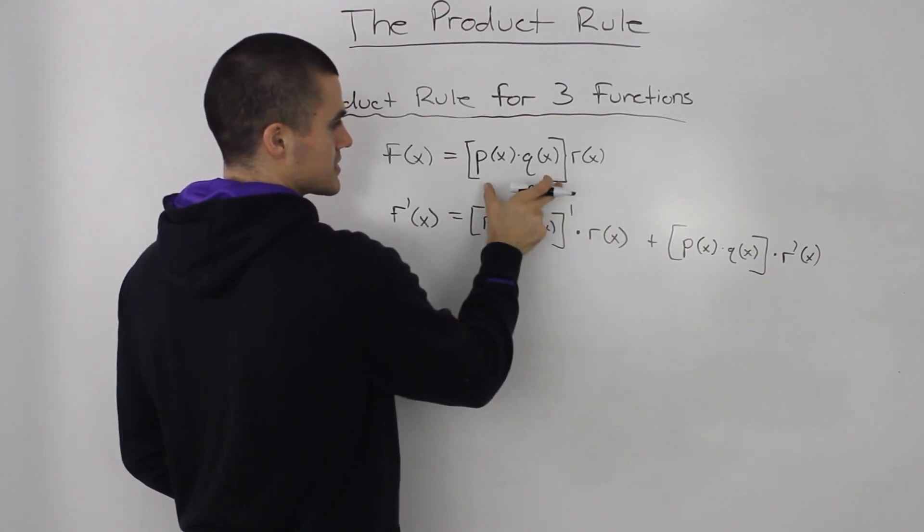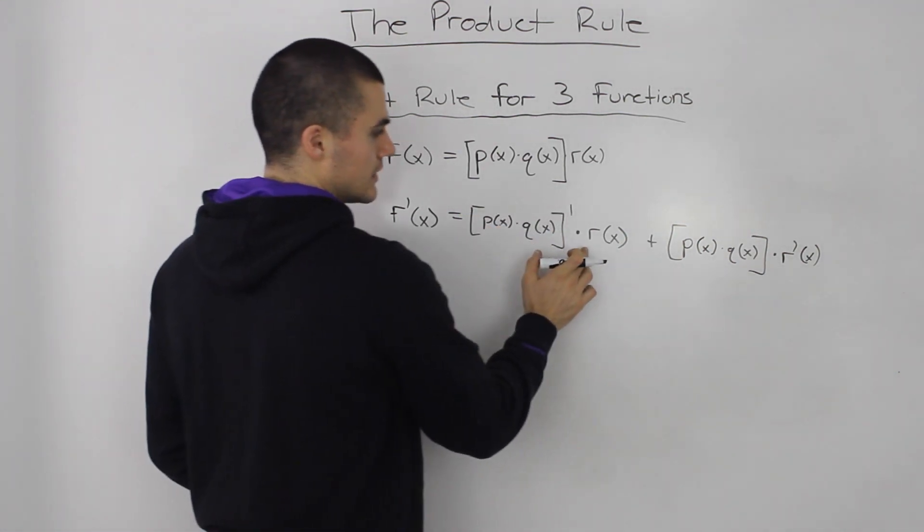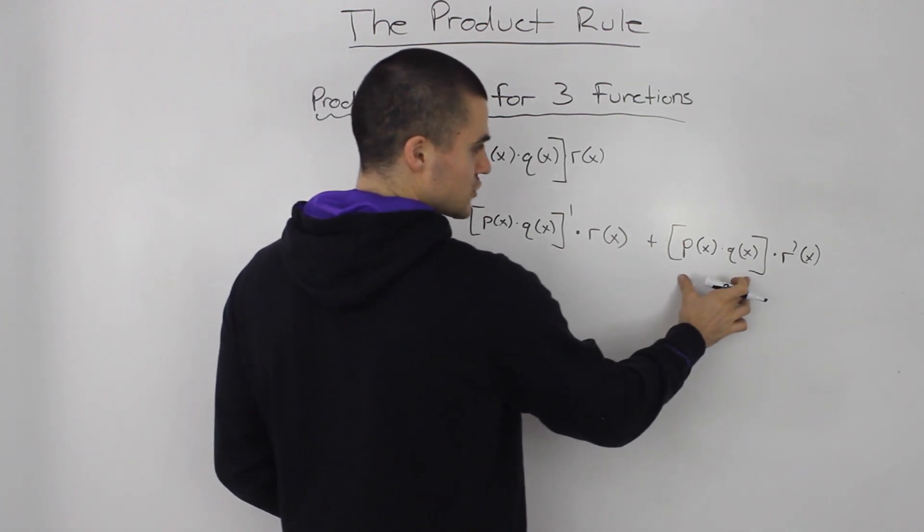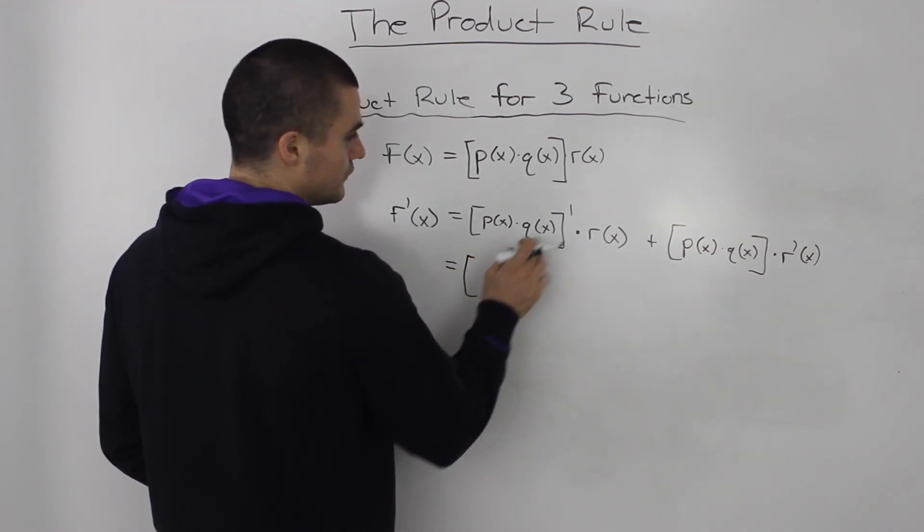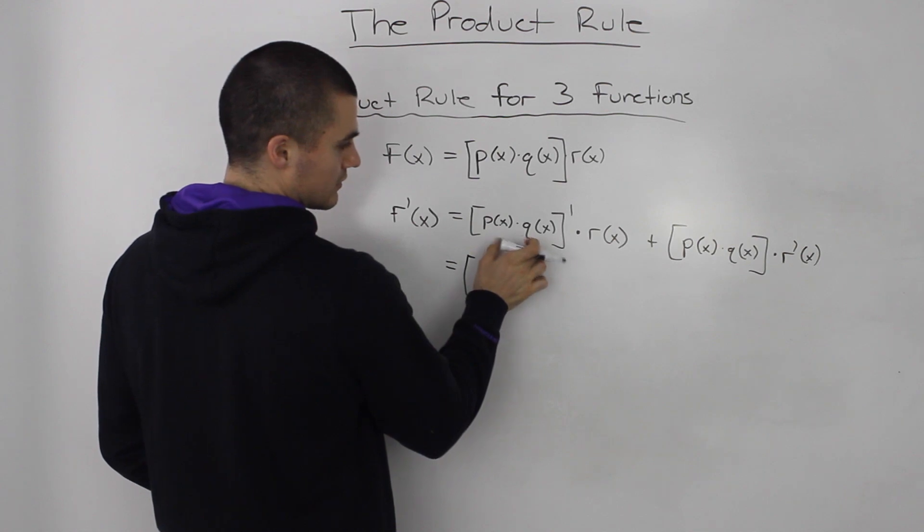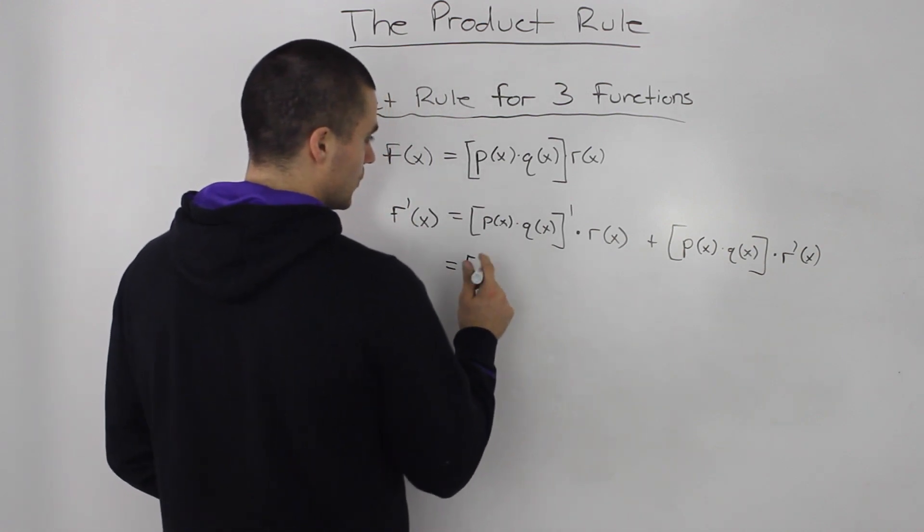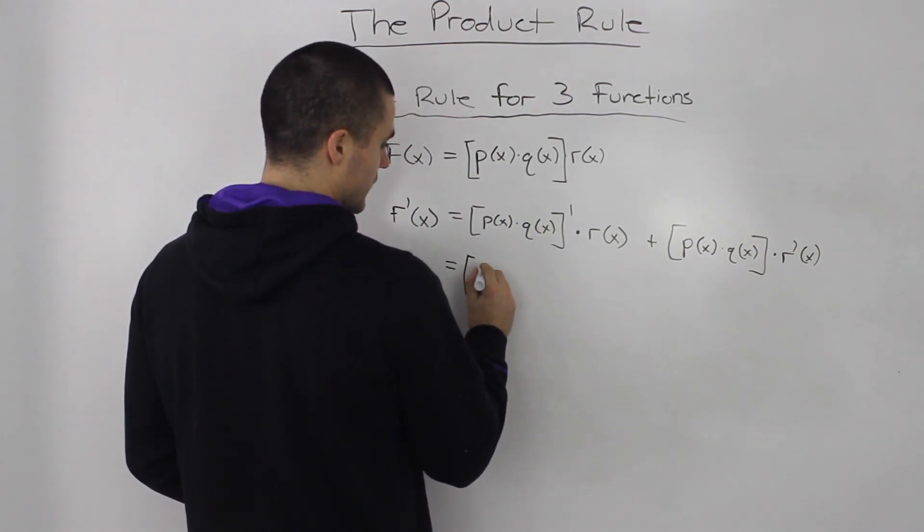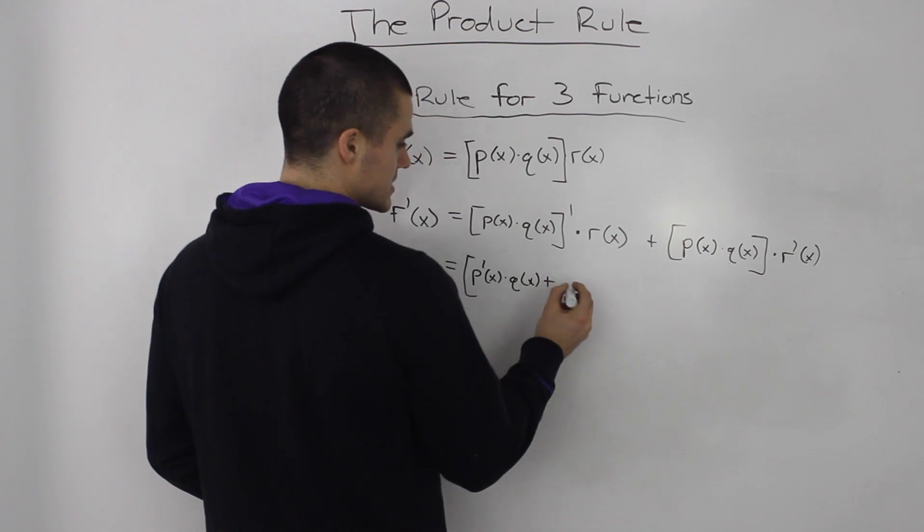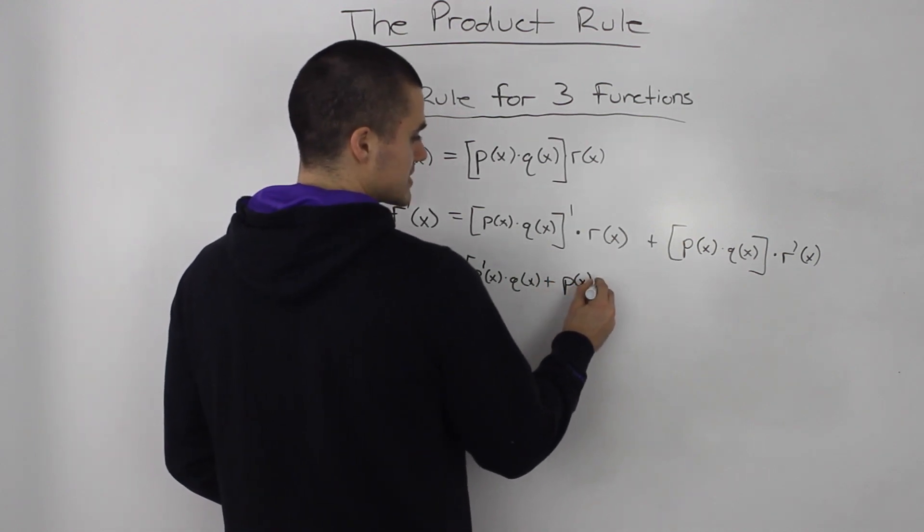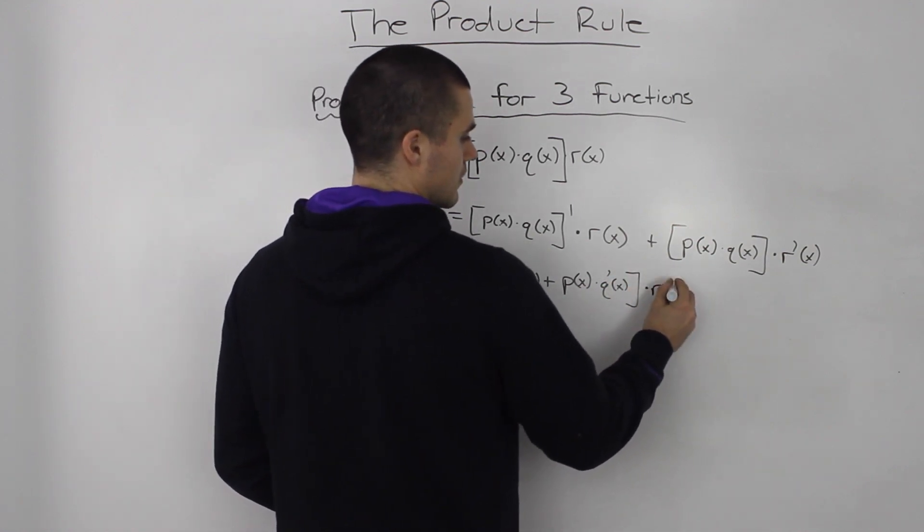And then, notice how the derivative of this function here, since it's a product of two functions, we can do the product rule again on that. So the derivative of that will be the derivative of the first function, p of x, times q of x, plus p of x times the derivative of q of x, times r(x).